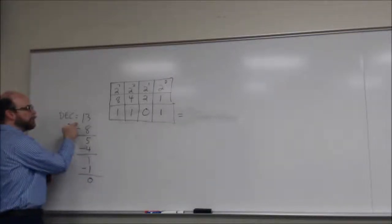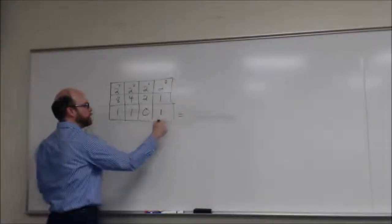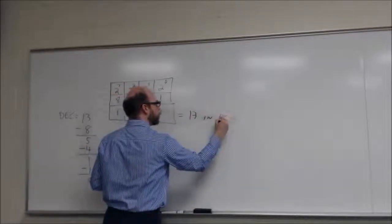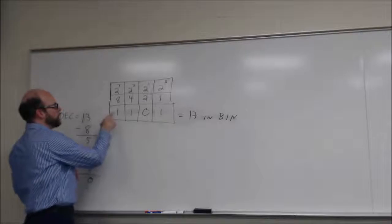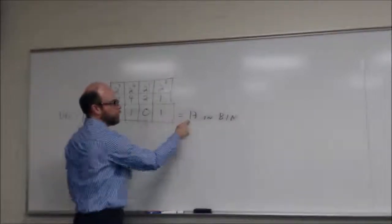So the decimal value of thirteen equals one, one, zero, one in binary. And we can double check that by doing the math, which is eight plus four is twelve, plus one equals thirteen.